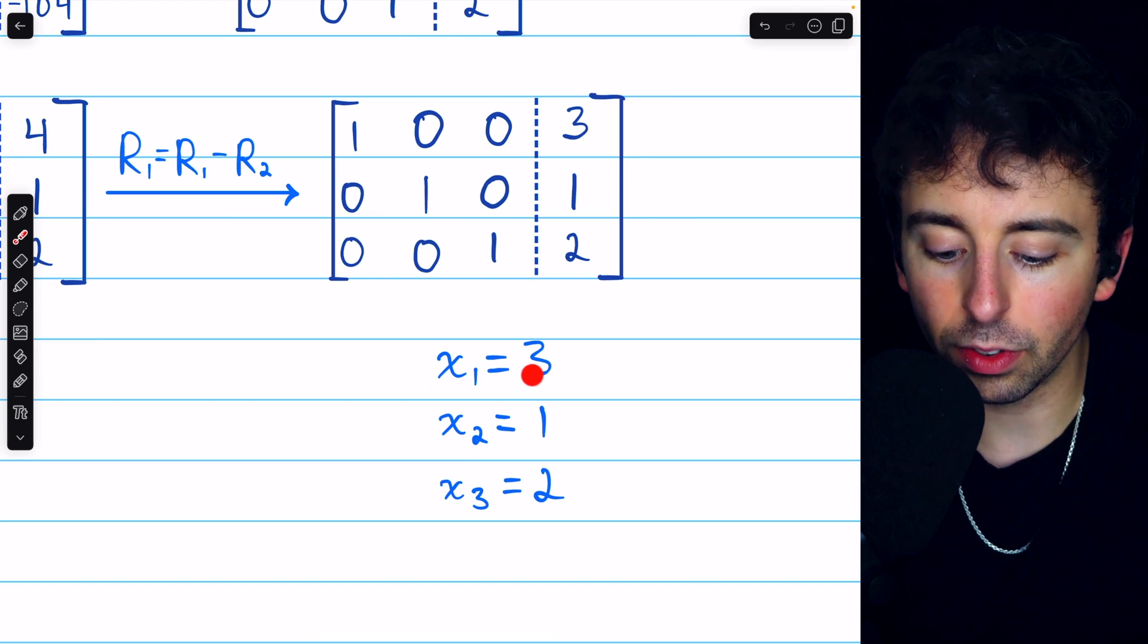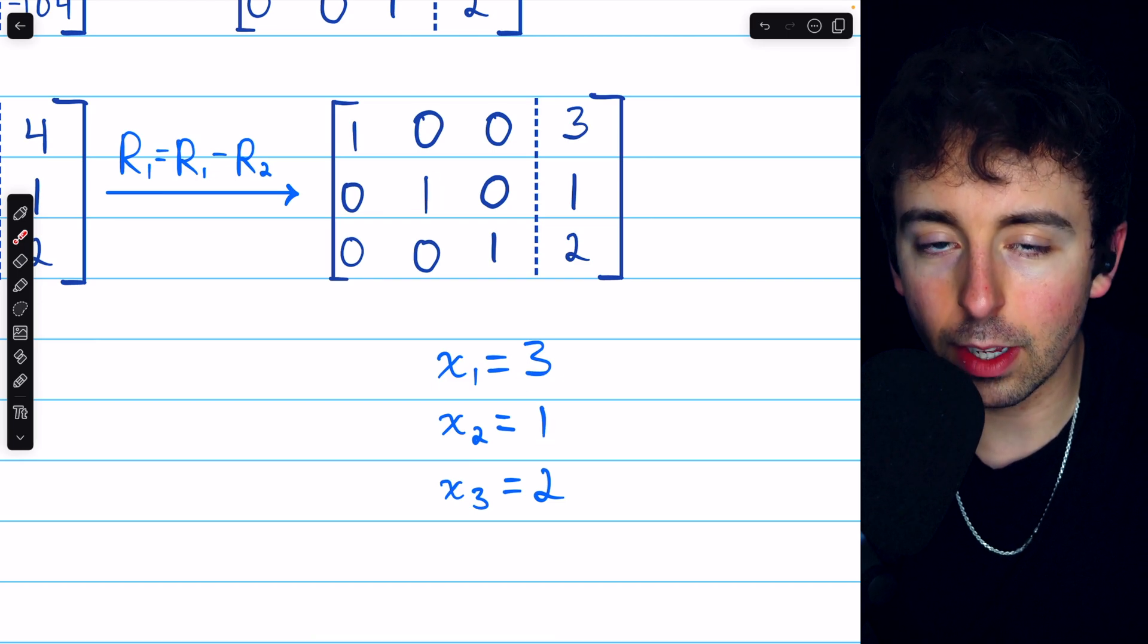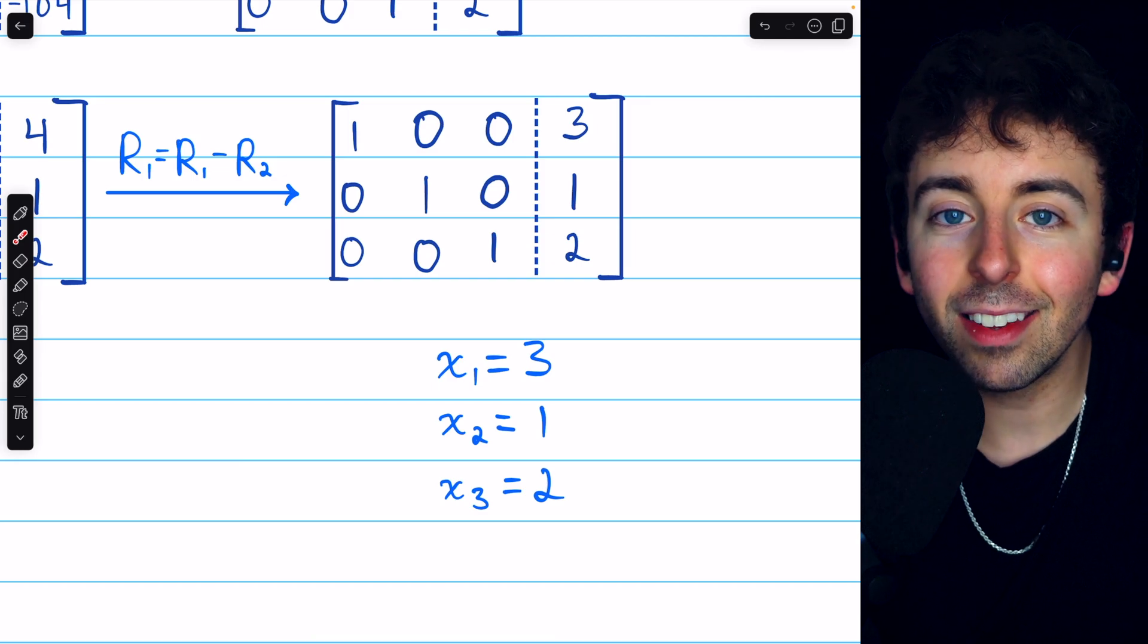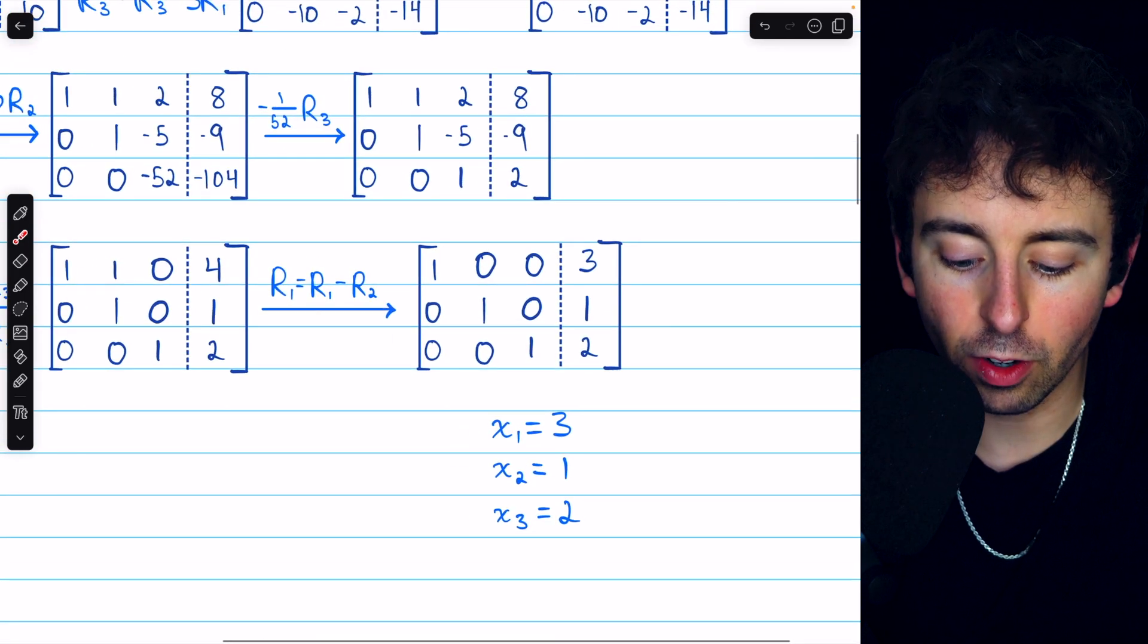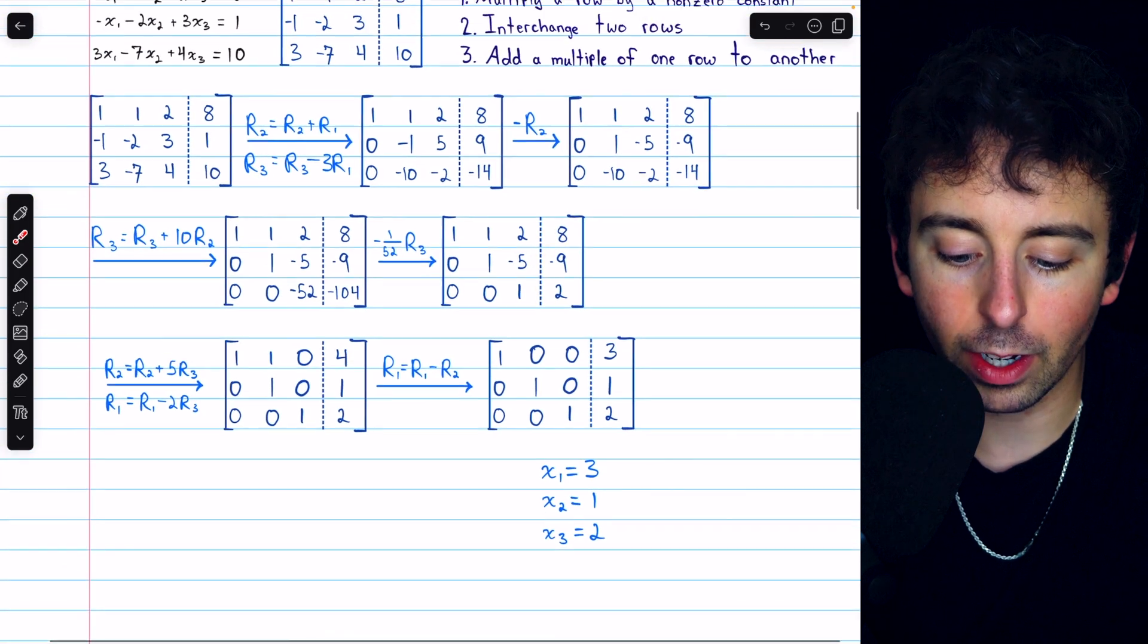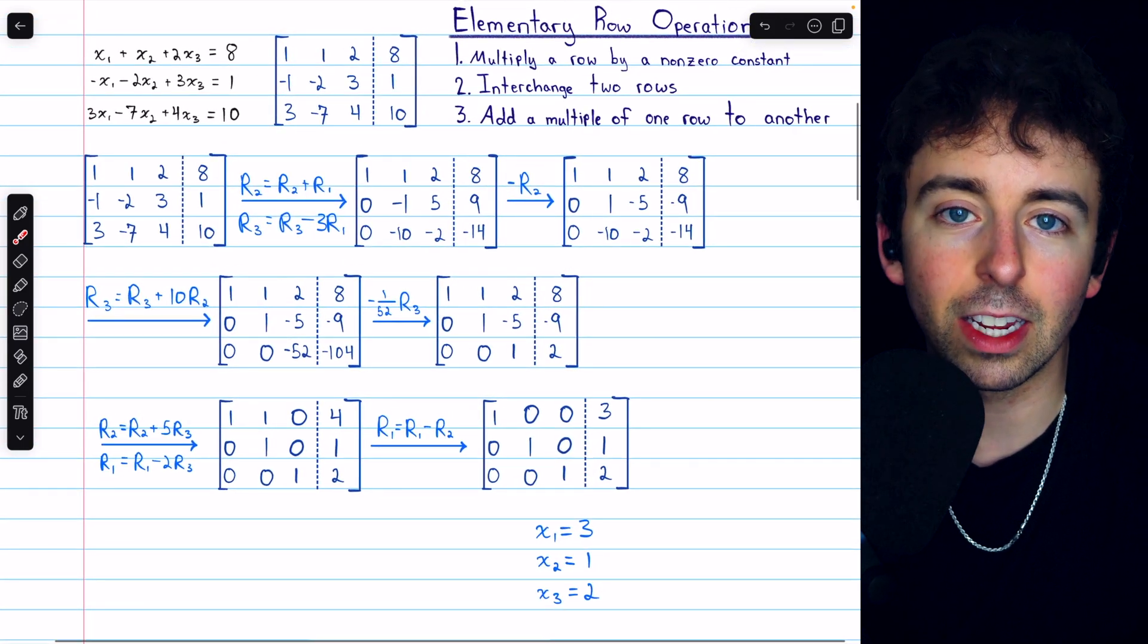we see that x1 equals 3, x2 equals 1, and x3 equals 2. And that is how we use elementary row operations and an augmented matrix to solve a system of linear equations.